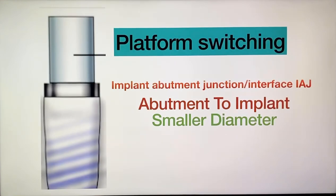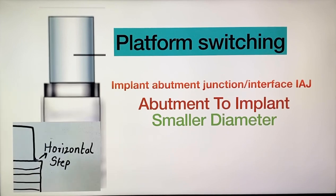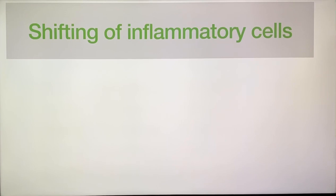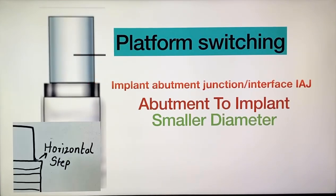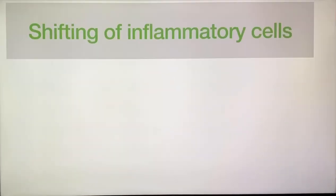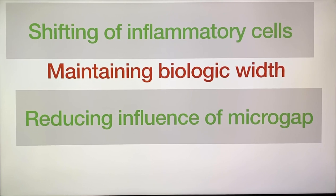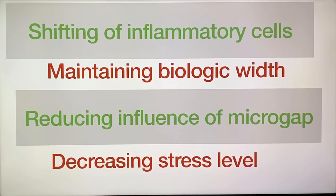So there came the concept of platform switching, which can compensate for the problem of crestal bone loss. In platform switching, a smaller diameter abutment is attached to a larger diameter implant collar, causing formation of a horizontal step. This step leads to prevention of inflammatory cell proliferation at the crestal bone. Platform switching helps in four main ways: shifting of inflammatory cells, maintaining the biological width, reducing the influence of the micro gap, and decreasing the stress level.